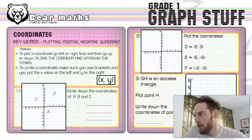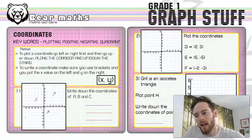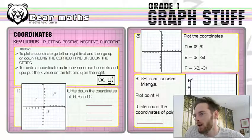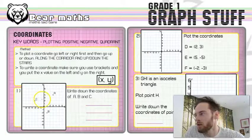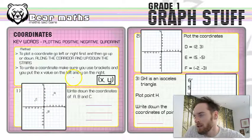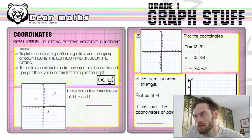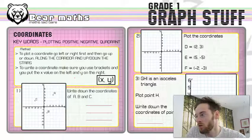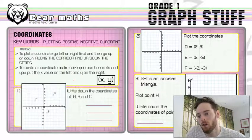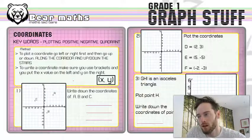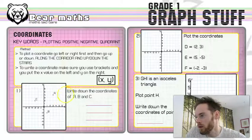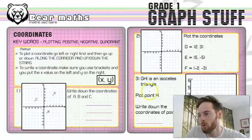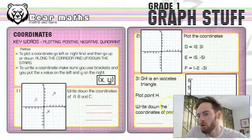So the key words here are plotting. Plotting is when you put a little x in the right place. You're just showing where the coordinate is. Positive is any number that's bigger than zero. Negative is any number that's less than zero and a quadrant is a part of the graph. There are four quadrants in the graphs that I've drawn for you in questions one and two and there's one quadrant in question three which you'll see when I move myself over.